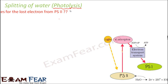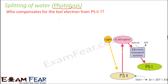Now why do we need photolysis? When light falls on photosystem 2, an electron gets excited and moves out of PS2, creating an electron deficiency in PS2. In order to compensate for that deficiency, splitting of water takes place.